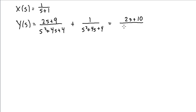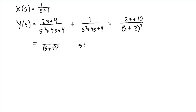The denominator factors as (s + 2)². The next step is a partial fraction expansion: Y = A/(s + 2)² + B/(s + 2). Using the cover-up method, the coefficient of the (s + 2)² term is 6. Solving for the coefficient of the (s + 2) term gives 2.